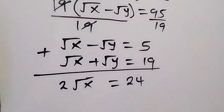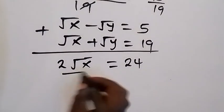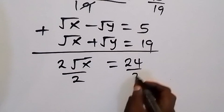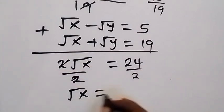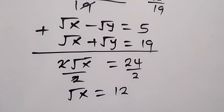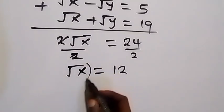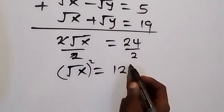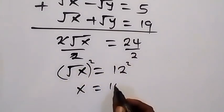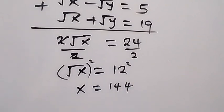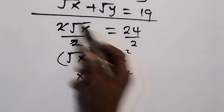Dividing both sides by 2, we get root x equals 12. To find x, we square both sides: squaring cancels the square root, so x equals 144.